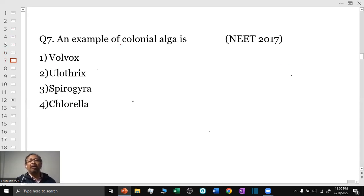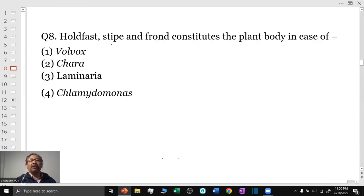Question number 7: An example of colonial algae is Volvox. Chlorella is a unicellular algae. Ulothrix and Spirogyra are filamentous unbranched algae. Question number 8: Holdfast, stipe, and frond constitute the plant body in case of Phaeophyceae. So, it is the Laminaria.